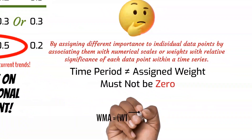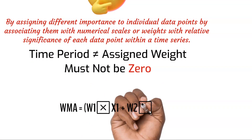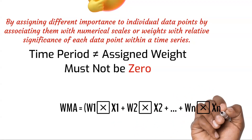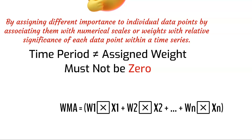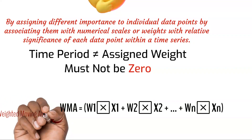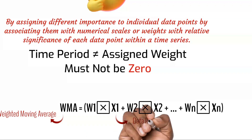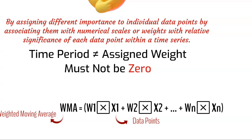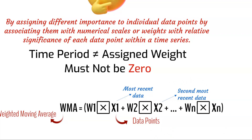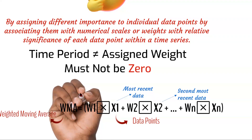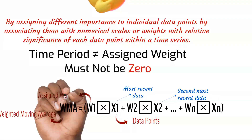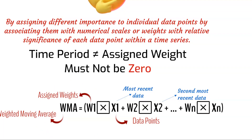The formula for calculating a weighted moving average for a specific day within a time series is shown here. In this formula, WMA is the weighted moving average for the specific data points you're calculating. X values represent the data values for each data point within the time period, where X1 corresponds to the most recent data point, X2 to the second most recent, and so on. W values represent the weights assigned to each data point, where Weight 1 corresponds to the most recent day, Weight 2 to the second most recent, and so on.